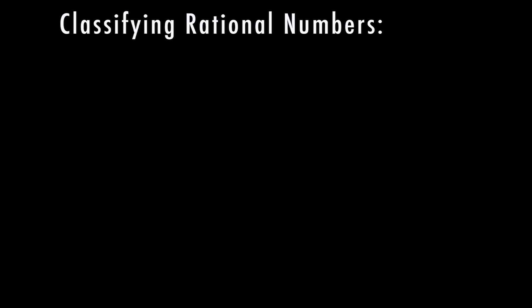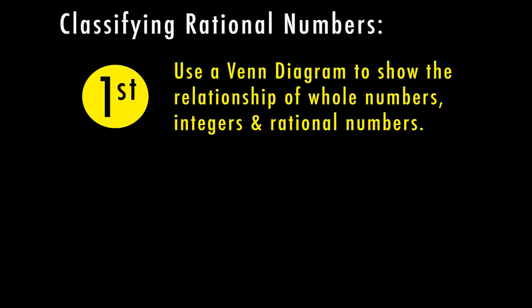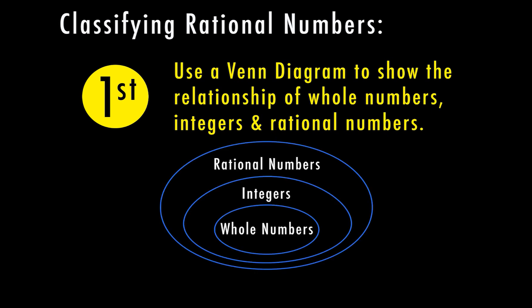We're going to classify these rational numbers, and the first thing we need to do is use a Venn diagram to show the relationship of whole numbers, integers, and rational numbers. When we have a Venn diagram, that means we have three circles inside of each other. Going over these definitions will help us make sure we have those categorized better.